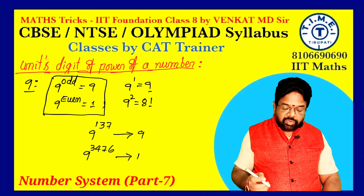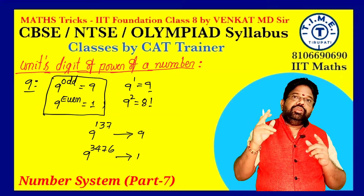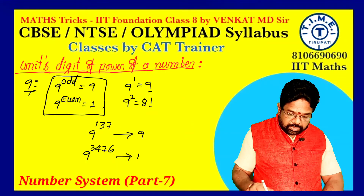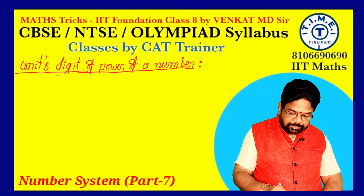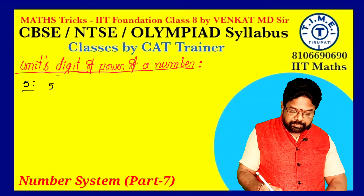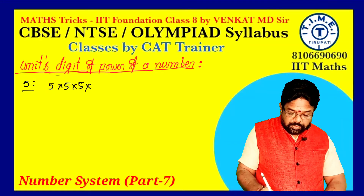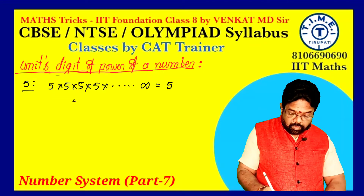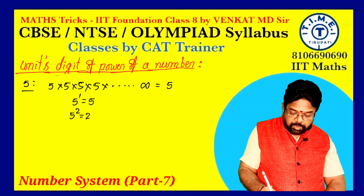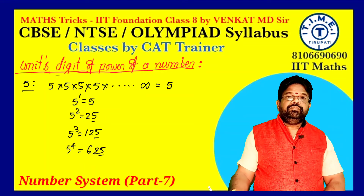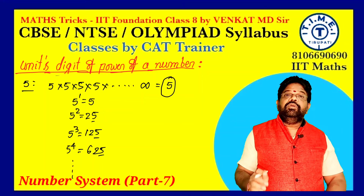Now two digits remain: 5 and 6. For 5: multiplying 5 any number of times always gives the same unit digit. 5^1 = 5, 5^2 = 25, 5^3 = 125, 5^4 = 625 — unit digit is always 5. So 5 raised to any power always has unit digit 5.